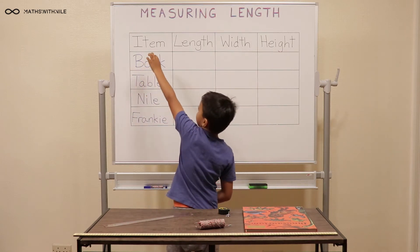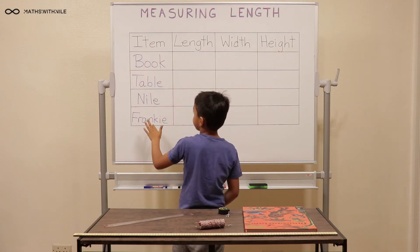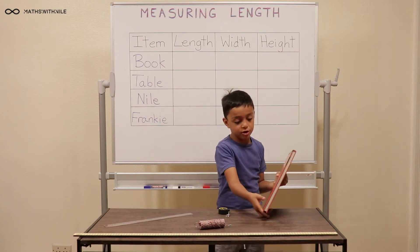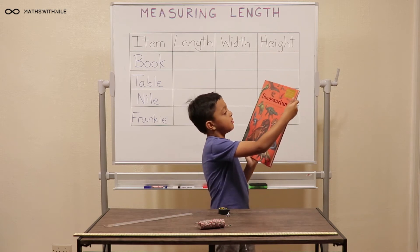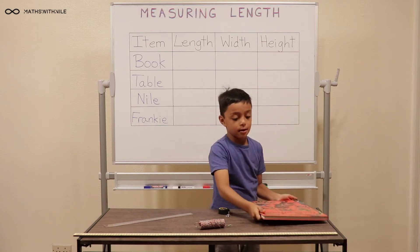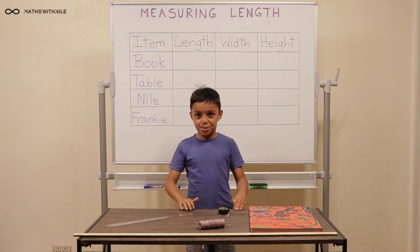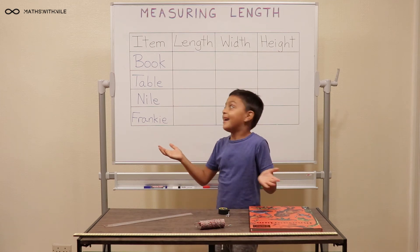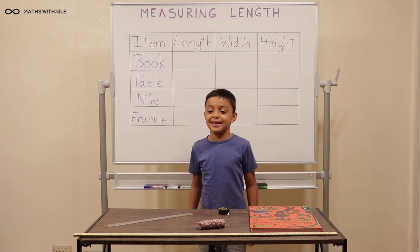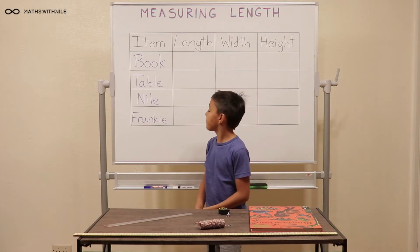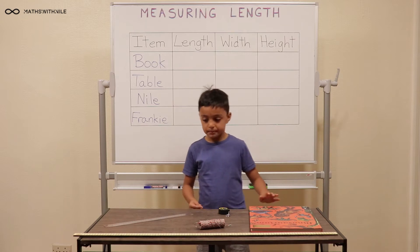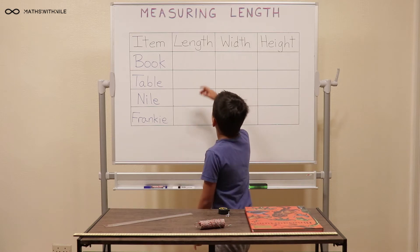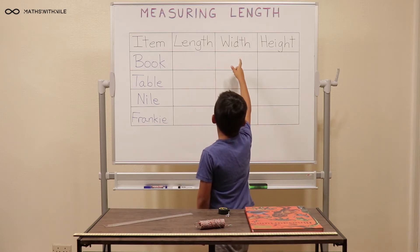So this says items, so this is what I'm going to be measuring. A book — this book is called Dinosaurium. And I'm going to be measuring this table. And myself. And then also my dog Frankie. So what are you going to measure first? The book. Let's start with the book. So I wanted you to go through the headings in the top row. So item and then?